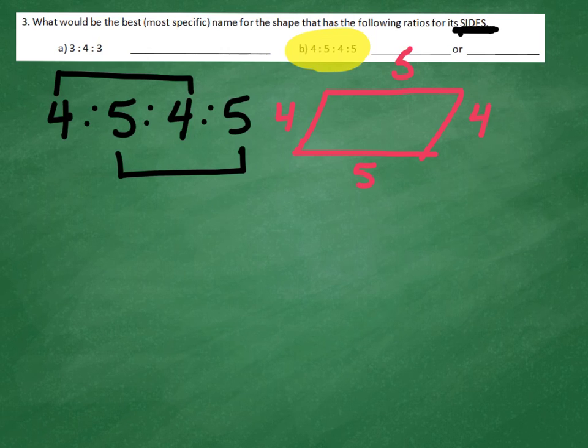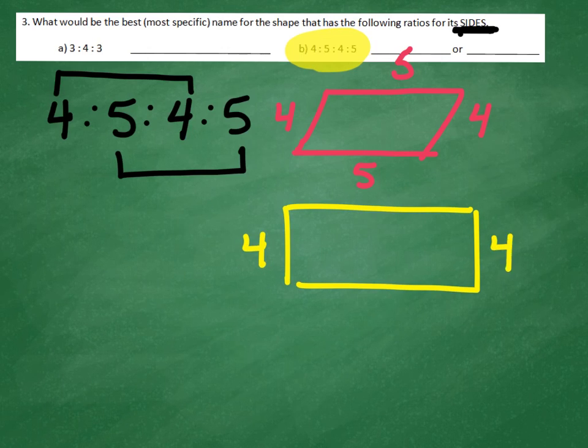It also could be a rectangle, couldn't it? Because opposite sides of a rectangle are equal. Could it be a square? Well no, because in a square they would all have to be the same, so it's not a square.